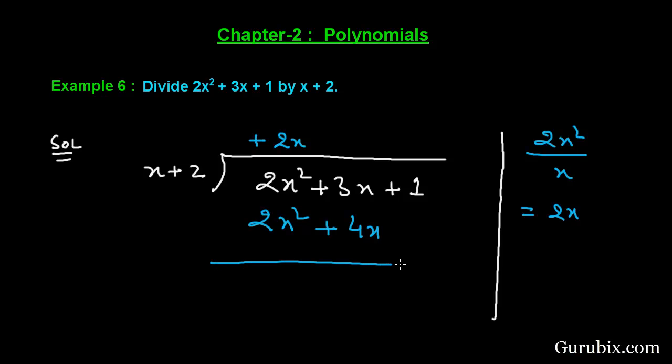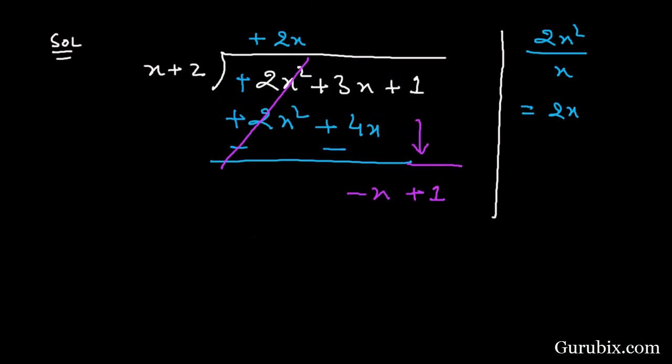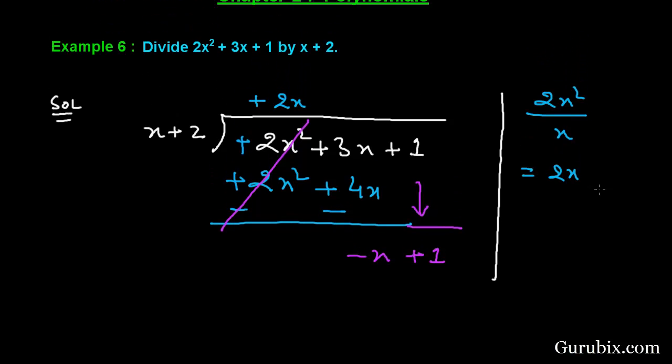Now we shall change the sign of these terms. Here we shall write negative. These 2 terms will be cancelled. And now we have minus x, and we shall bring down this positive one here like this.